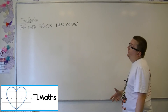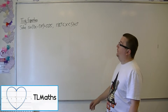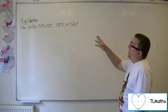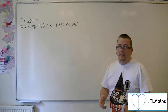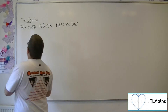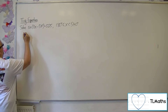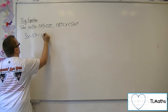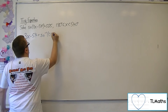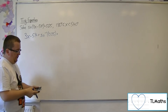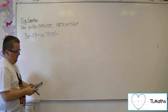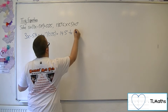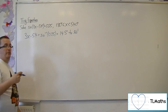In this video, I want to solve sine of 3x minus 54 degrees equals 0.25 between 180 degrees and 540 degrees. The first thing to do is to inverse sine both sides. We want to find the inverse sine of 0.25, which is 14.5 degrees to 3 significant figures.